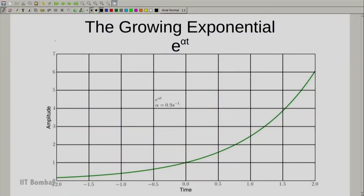So the next signal we look at is the growing exponential. The growing exponential is written as e raised to the power of alpha times t where alpha is a constant which tells you how much the exponential grows or decays. In this case we have taken alpha as 0.9 and when alpha is positive as you can see over here the exponential keeps rising and grows over time.